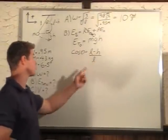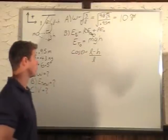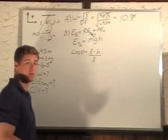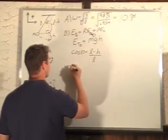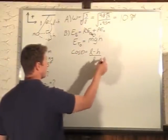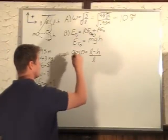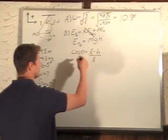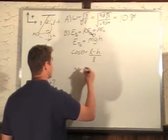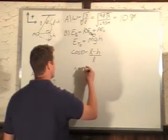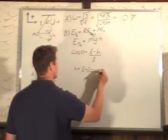I'm going to solve for h because I know cos theta and l. Multiply l over, so l cos theta equals l minus h. Then I'll add h over to this side and subtract l cos theta to solve, and I get h equals l minus l cos theta.